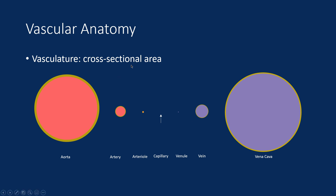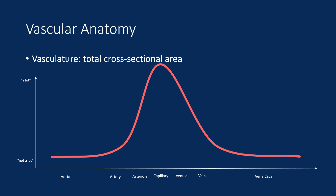Individual cross-sectional area only tells part of the story. If we multiply the individual cross-sectional area by the number of each set of vessels, we get a much different picture — the total cross-sectional area. The aorta is very large, but there's only one, so it has relatively limited total cross-sectional area. Whereas individually capillaries are incredibly small, but since there are millions upon millions, together in sum they have an enormous total cross-sectional area.